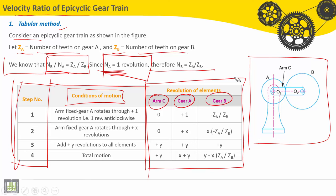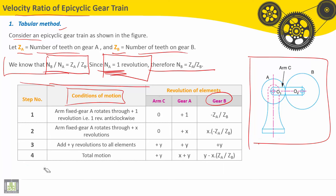Let's see how to calculate them. For the first configuration, the conditions of motion are: the arm is fixed, gear A rotates through plus one revolution anti-clockwise.